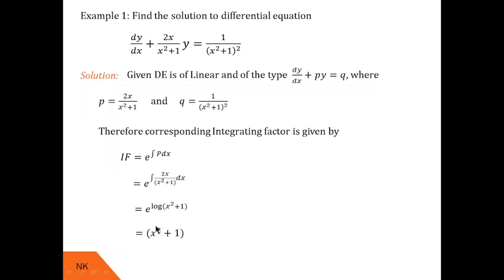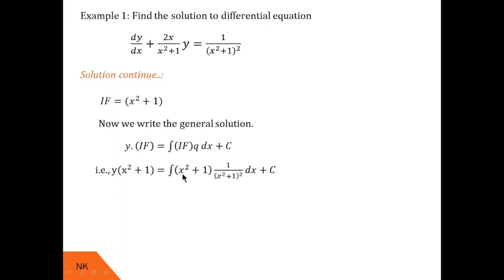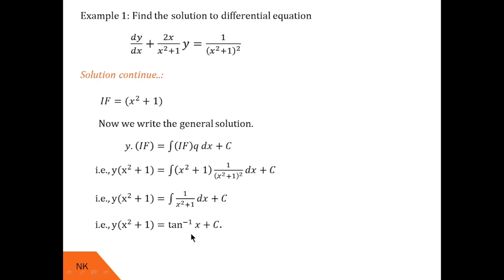Now we put this integrating factor into the general formula: y × (integrating factor) = integration of (integrating factor × Q) dx + C. The integrating factor is x² + 1 and Q is 1/(x² + 1)². Substituting, the x² + 1 cancels with one factor in the denominator, and on the right-hand side we get only the integration of 1/(x² + 1) dx + C. The integration of 1/(x² + 1) is tan⁻¹(x), so the solution is y(x² + 1) = tan⁻¹(x) + C.